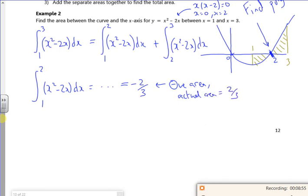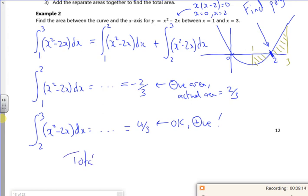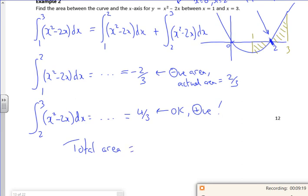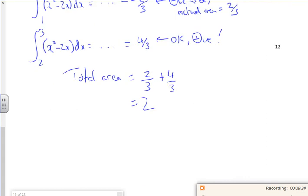Then the integral from two to three of x² - 2x dx. If I do all the maths that gives me an area of four thirds, and that's okay because that's positive. So my total area is two thirds that I've made positive plus the four thirds, which gives me two. There's some questions there, that's quite nice actually. Right, I'm going now, bye.